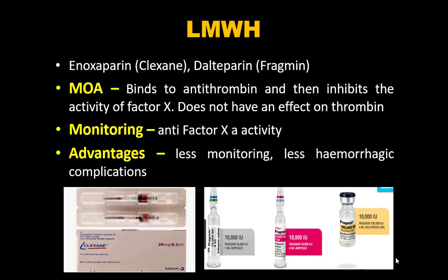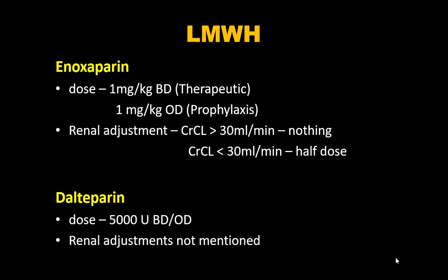LMWHs bind to antithrombin and inhibit factor Xa. Advantages: less monitoring and fewer hemorrhagic complications. Therapeutic dose of enoxaparin: 1 mg/kg BD; prophylactic dose: 1 mg/kg OD. If creatinine clearance is more than 30 mL/min, no dose adjustment is needed. If CrCl is less than 30, reduce dose by half.